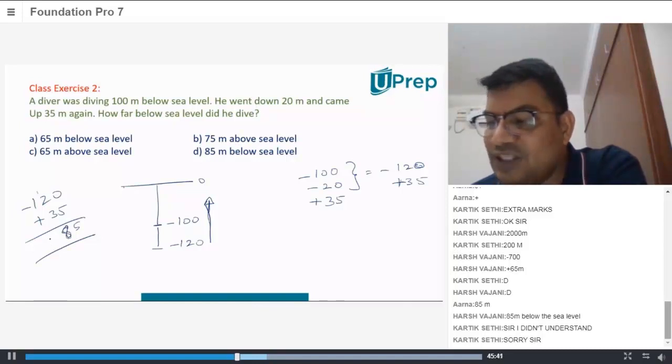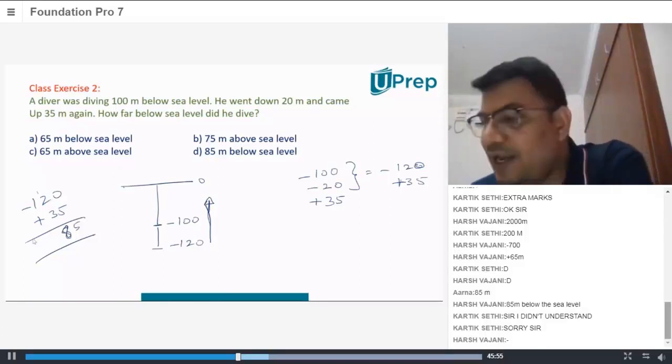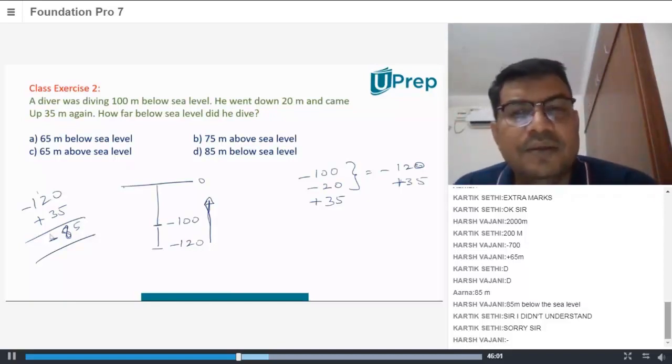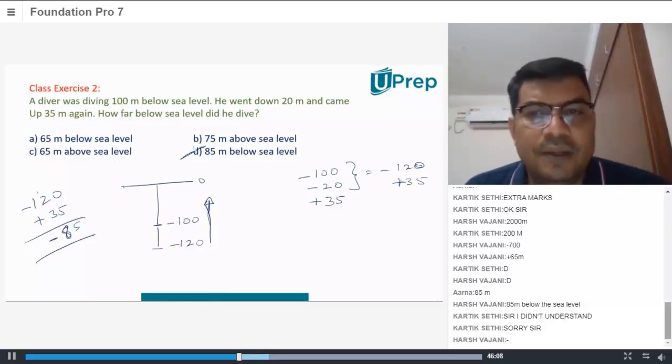Now you are left with 85. Is it plus or minus? Minus 85 meters, very good. Now what do you mean by minus 85? So answer is 85 meters below the sea level. Is that correct? Yes sir.